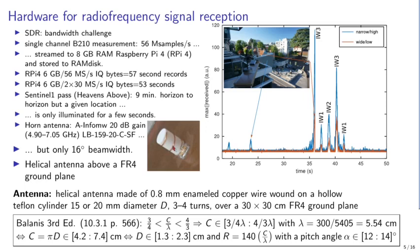The challenge in collecting Sentinel-1 data is that the satellite emits a 60 MHz-wide bandwidth, and a standard USB 2 laptop will not support such large data rates. Our solution is to use an embedded single-board computer — namely Raspberry Pi 4 — with its two USB 3 ports and 8 GB RAM used as a RAM disk for fast data storage.